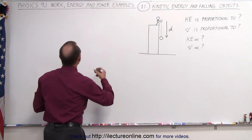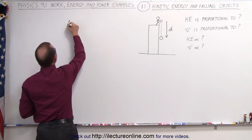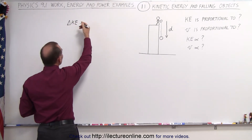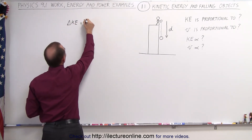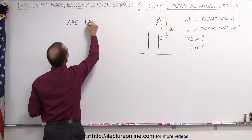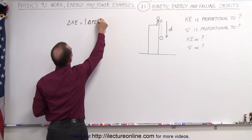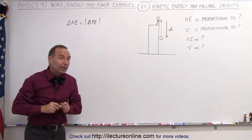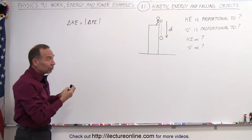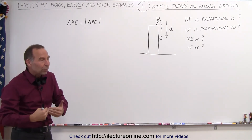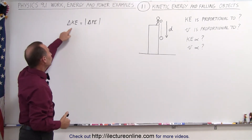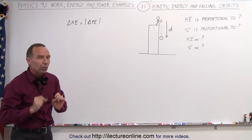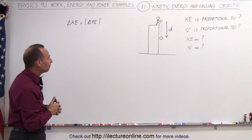So what we can say is that the change in kinetic energy — the increase in kinetic energy — is equal to the absolute value of the change in potential energy. We use the absolute value symbol because the change in potential energy is negative, since it's decreasing, and the change in kinetic energy is positive, since it's increasing, but the magnitude of the two is exactly the same.